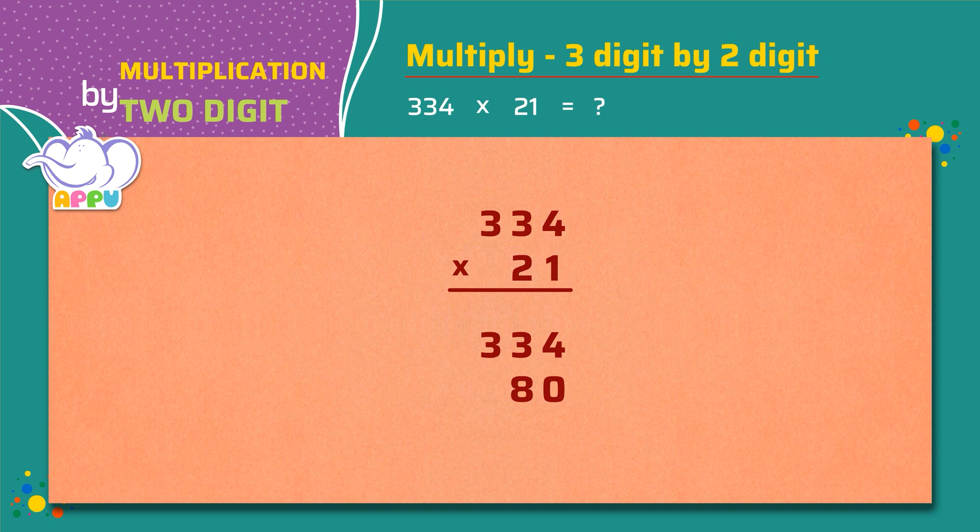Next, we multiply the number in the tens place by 2, which is 3 times 2 equals 6. We write this in hundreds place.